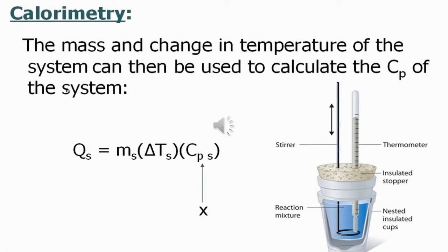Now that we have determined the energy of the system — which can be either positive or negative, meaning it either absorbed or released energy — it is equal to mass times the change in temperature times the specific heat of the substance. In this case the specific heat of the substance is unknown, so we determine it by rearranging the equation: specific heat equals the energy of the system divided by the mass times the change in temperature.